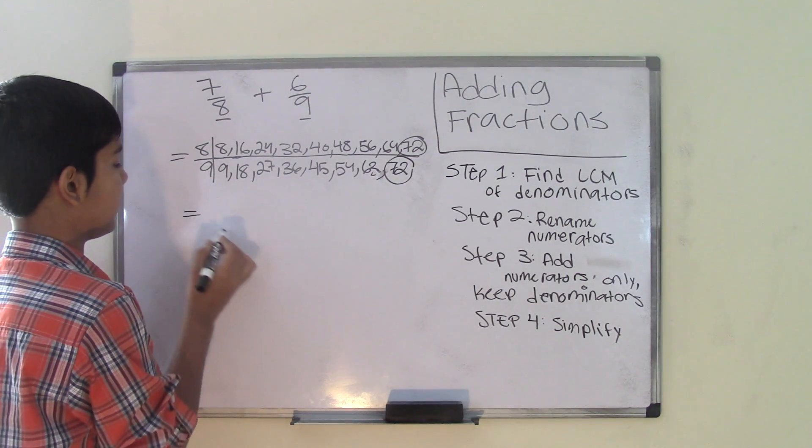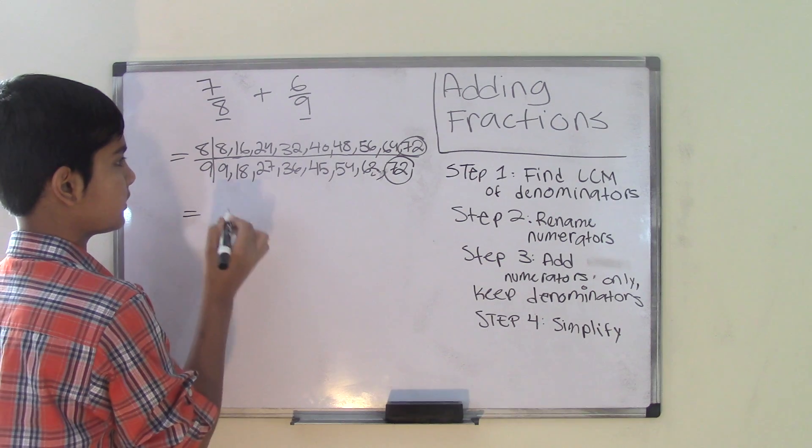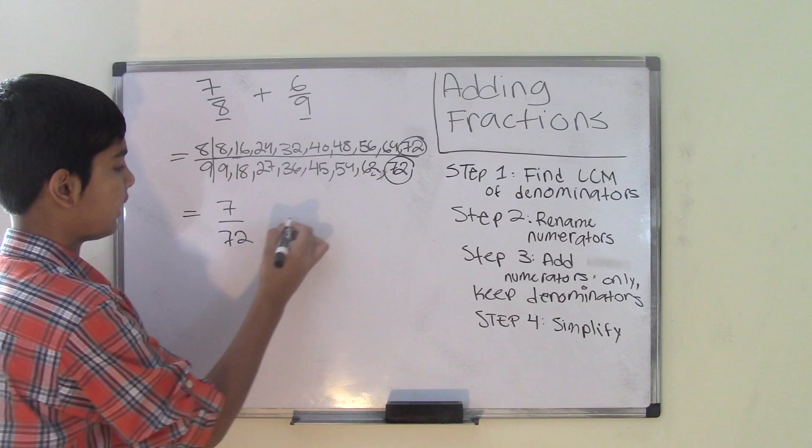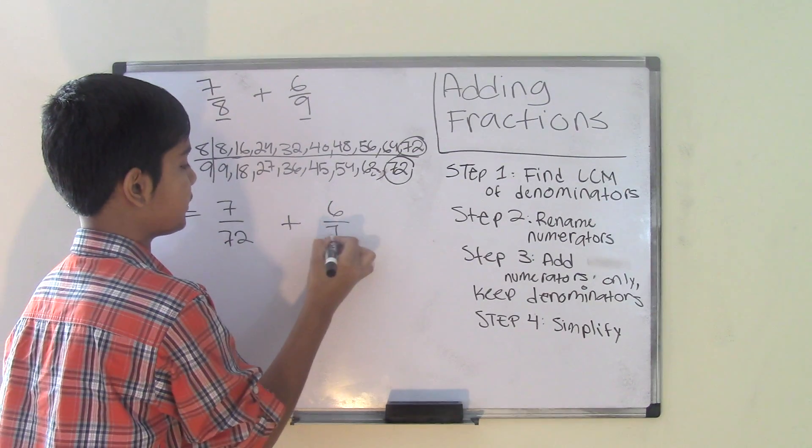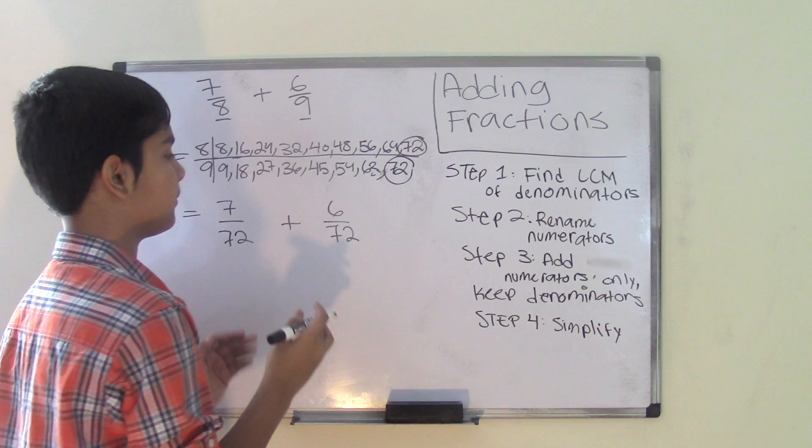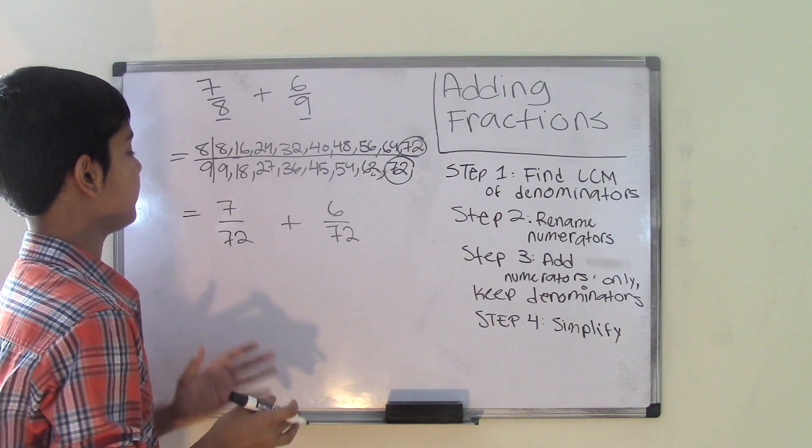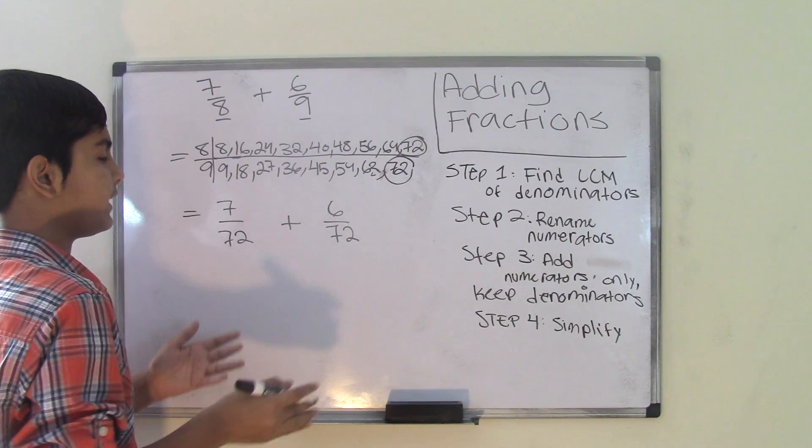we can now say that the fractions are 7 over 72 and 6 over 72. Now we have the two common denominators. Step number 2 is to rename the numerators. The numerators cannot stay the same, they have to be renamed.